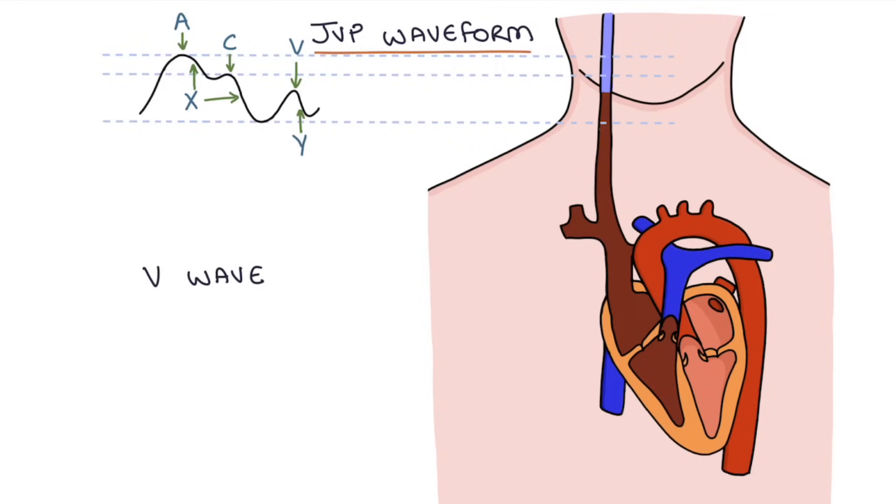The V wave comes next, and this happens when the atria relaxes and the right atrium starts to fill with blood. At this point the tricuspid valve is still closed at the end of systolic contraction of the ventricles. As the atria fills completely, this filling starts to occur higher up into the superior vena cava, the internal jugular vein, and as a result the JVP rises. This is the V wave.